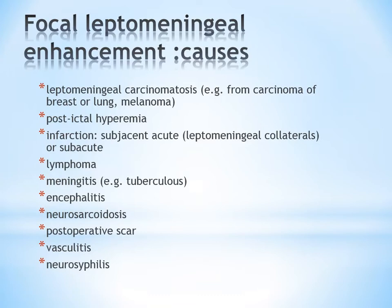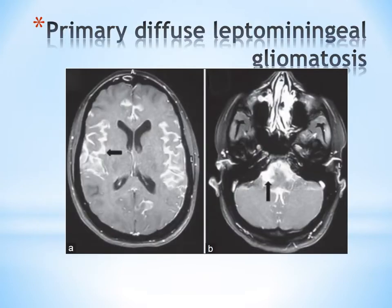Causes of focal leptomeningeal enhancement include leptomeningeal carcinomatosis, post-ictal hyperemia, infarction, lymphoma, meningitis, encephalitis, neurosarcoidosis, post-operative vasculitis, and neurosyphilis. This is a case of primary diffuse leptomeningeal gliomatosis showing leptomeningeal enhancement.